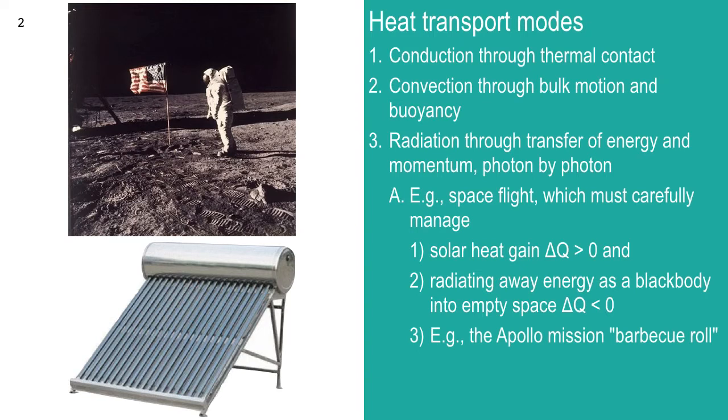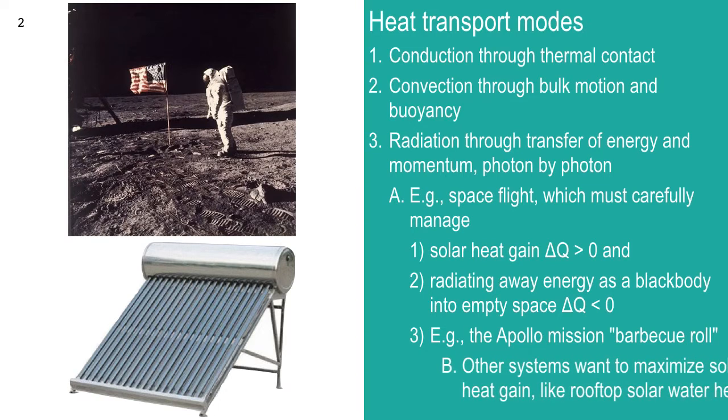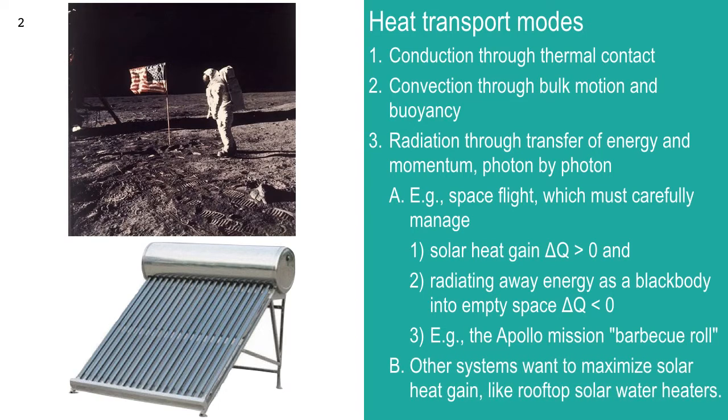And an example of that is on the Apollo mission, they did something called, when they got out of Earth orbit, so they're no longer going day, night, day, night, day, night, as they orbit the Earth every 45 minutes, they had to do the barbecue roll. And all that is is that they start, they aim the capsule, the command module, towards the moon or towards where they're heading. And then they give it a little bit of a spin, one revolution every 10 minutes, I think. They're very slow.